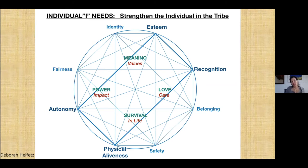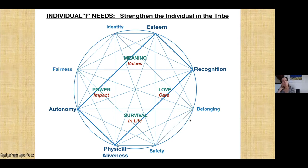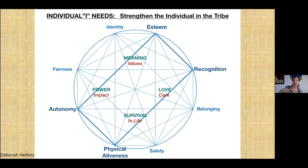The next quartet of needs are the individual needs. These needs strengthen me within the tribe. All eight of these needs are moving in me and in you, but the needs particularly relevant when we're trying to strengthen the tribe and strengthen me within it — and which needs I may exaggerate or not — that gets into more sophisticated use of this model. This is just an introduction.